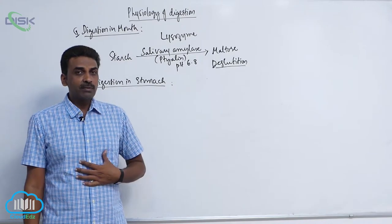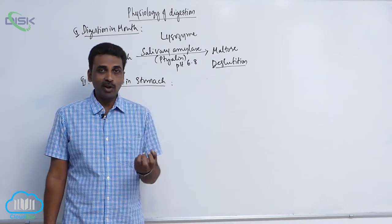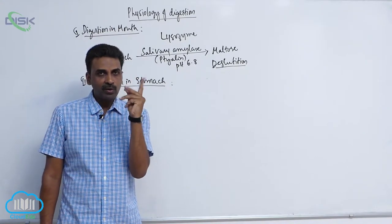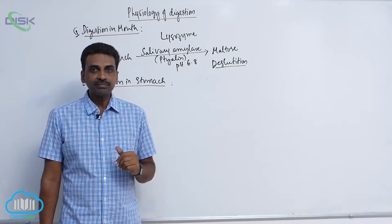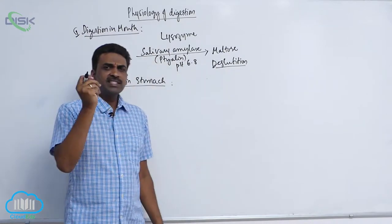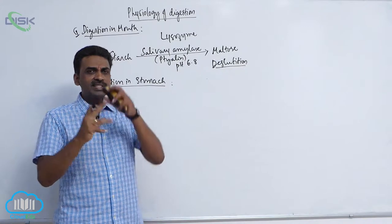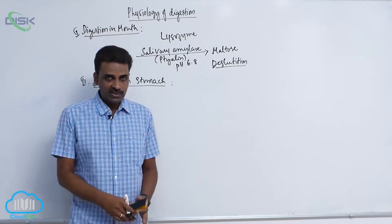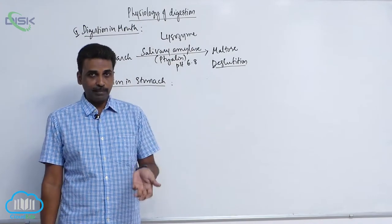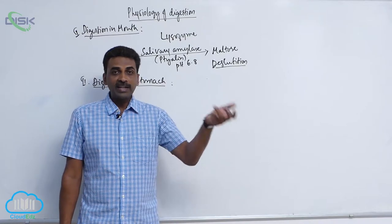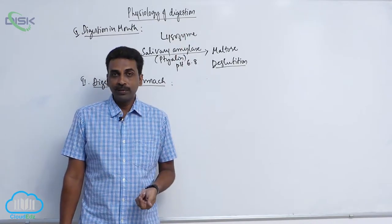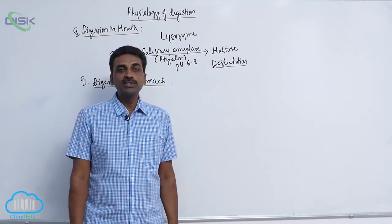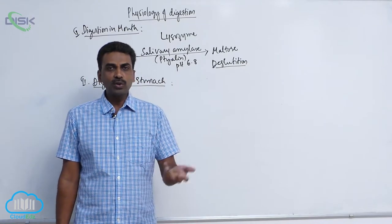Inside the stomach, both mechanical and chemical digestion occur. Mechanical digestion: inside the wall of the stomach there are smooth involuntary muscles — longitudinal, circular, and oblique — undergoing vigorous contraction, causing churning. Gastric glands are present; glands in the cardiac and pyloric stomach generally produce mucus, while glands in the fundus and body produce various enzymes.